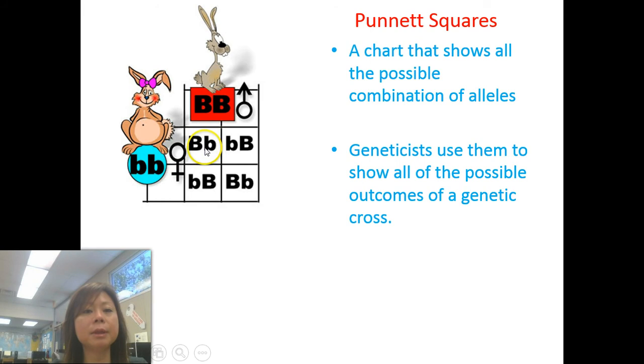In this case, it's capital B, capital B, and you put the alleles of another parent on the side. You bring them together. So this would be a big B from the top and a little b from the side, and this child would have big B, little b. Same here, except you want to put a capital in front usually.